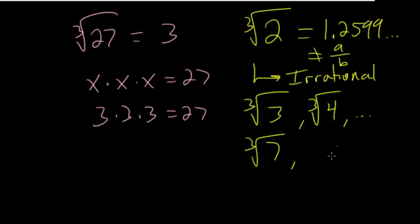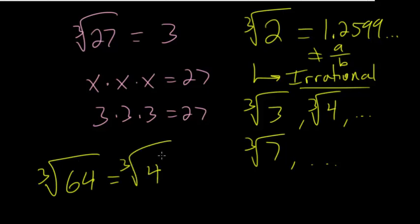The cube root of 8 we know is simply equal to 2. If it's a perfect cube, then it's a whole number answer, but if it's not a perfect cube, then it's going to be irrational. Most numbers are not perfect cubes. For example, if you have the cube root of 64, since 64 can be rewritten as 4 to the third power, this would actually have a whole number answer.